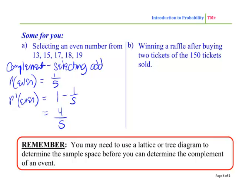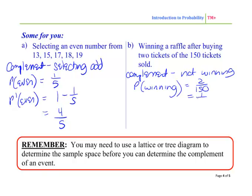Next, winning a raffle after buying 2 tickets with 150 tickets sold. Well, the complement would be not winning. The probability of winning was 2 out of 150 or 1 out of 75. So the probability of not winning would be 1 minus 1 out of 75, which would be 74 out of 75.